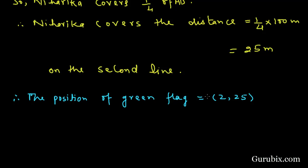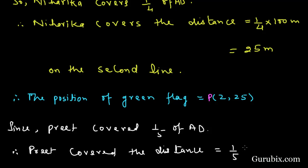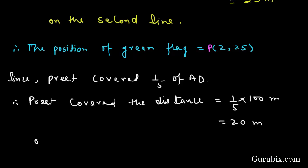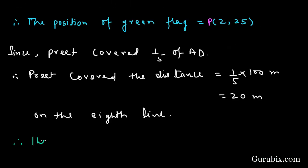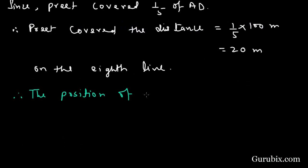Same as we are given that Preet covers 1/5th of AD. Therefore, Preet covered the distance 1/5th of 100 meters, this means 20 meters on the eighth line. Therefore, the position of red flag is (8, 20), and let us denote this point by Q.